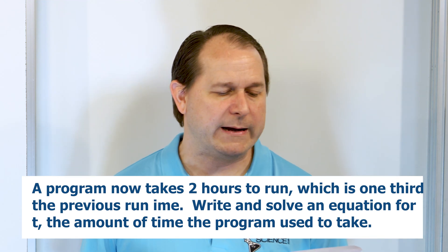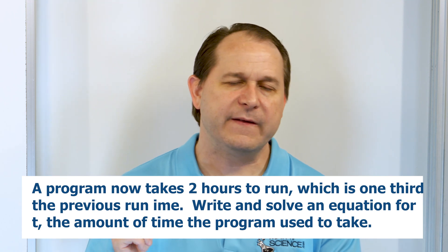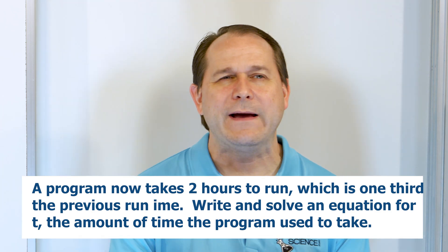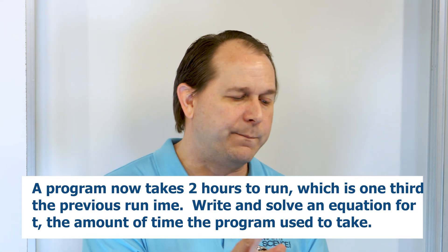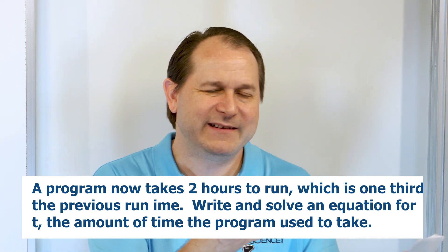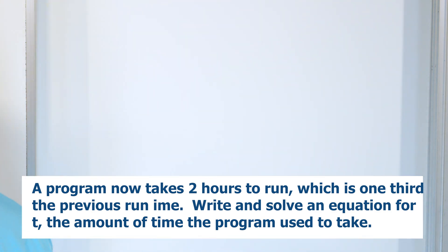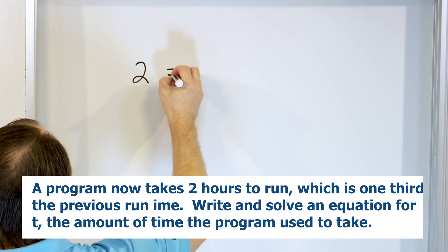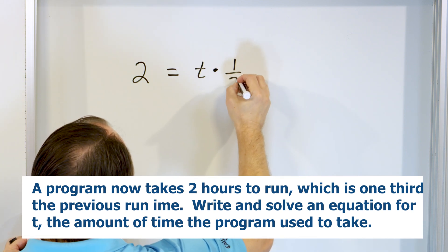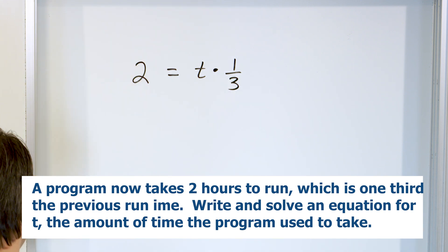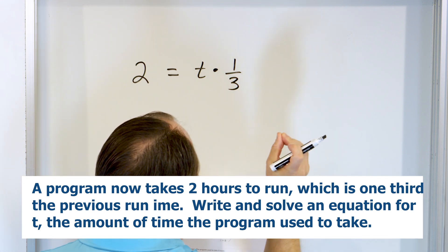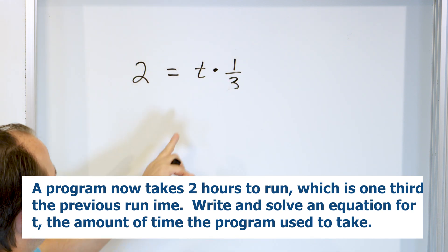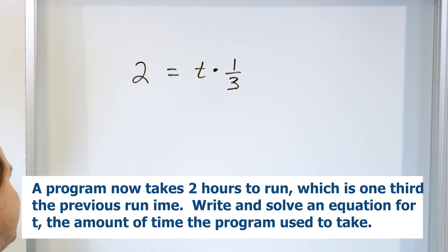Last problem: after optimizing a program, the time it takes to run is now only two hours. If this is one third of the previous runtime, write and solve an equation for t, the amount of time the program used to take. So before optimization the program took t hours to run. One third of the previous runtime means whatever it used to take multiplied by one third equals two hours. So the equation is one third times t equals two, where two is the new runtime.